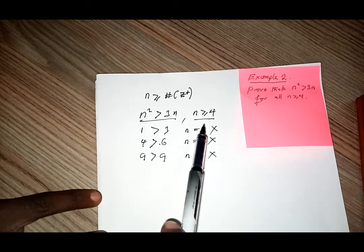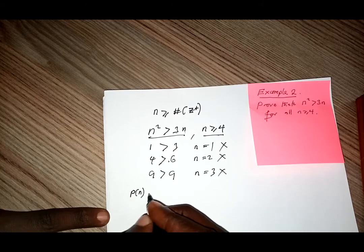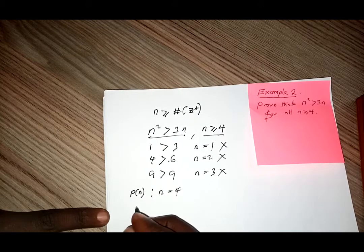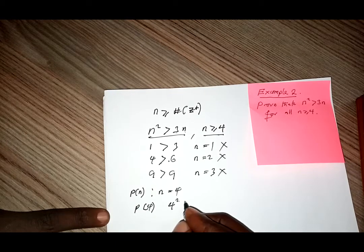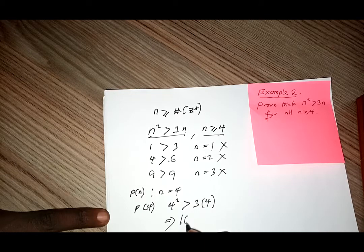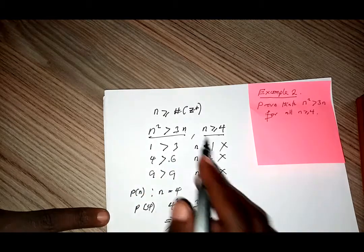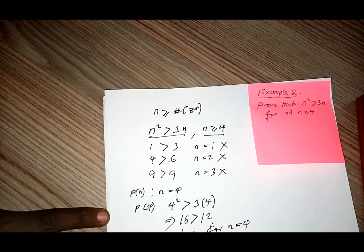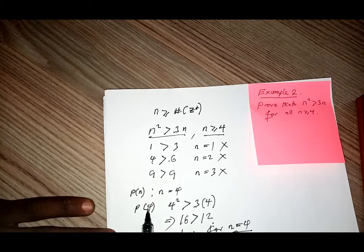The minimum requirement is supposed to be 4 going upward. So what if we have p(n) where n is equal to 4? We have 4 squared greater than 3 multiplied by 4, which means 16 is greater than 12. And for sure that is true. So this proposition is true for n equal to 4, which means the condition has been satisfied, so we are starting from 4.